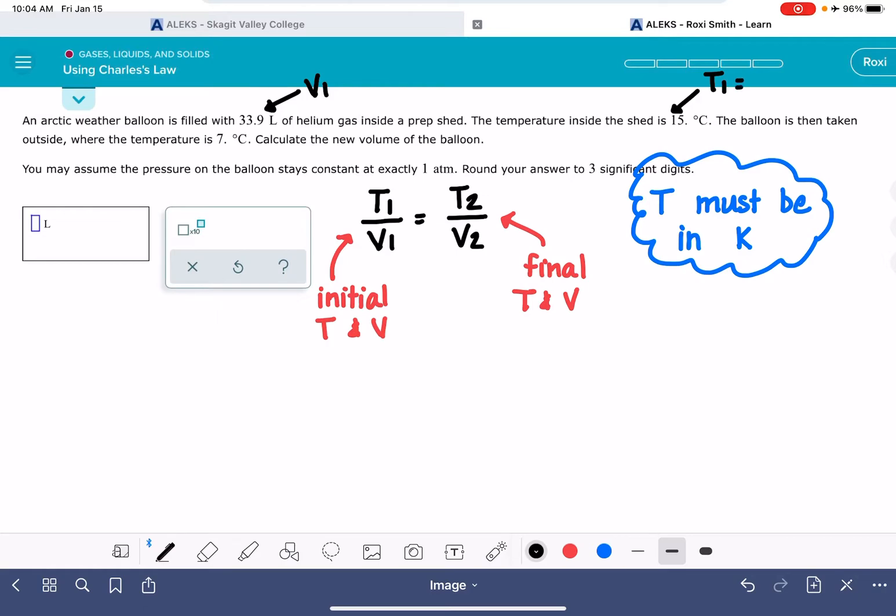And we need to convert that into Kelvin. So let's just do that right now so that we don't forget. 15 plus 273 is going to be 288 Kelvin.